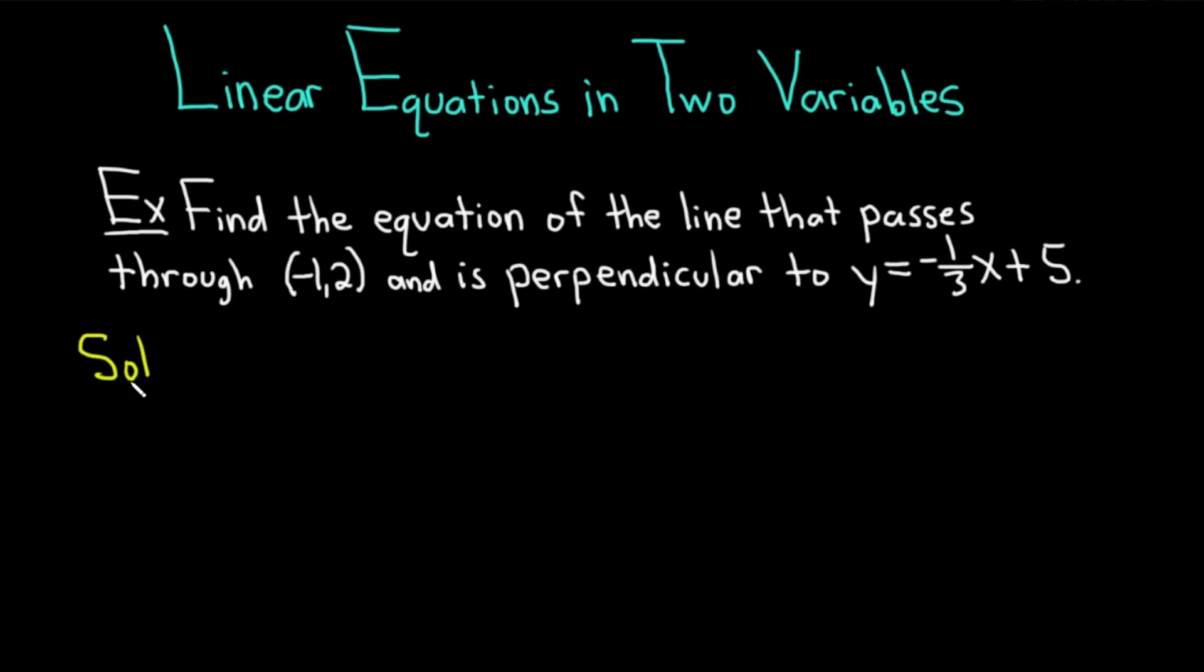Solution. In general, whenever you're looking for the equation of a line, you need two things: a point and a slope. We're already given the point, it's (-1, 2), so we just need to find the slope.